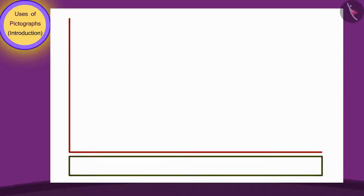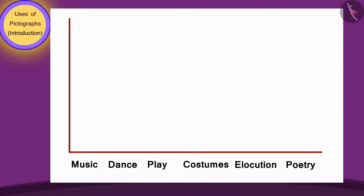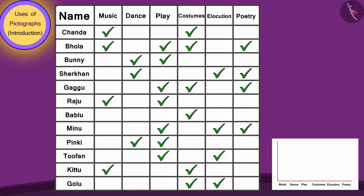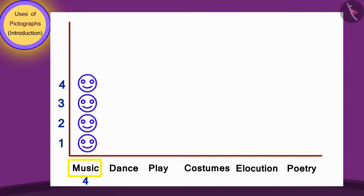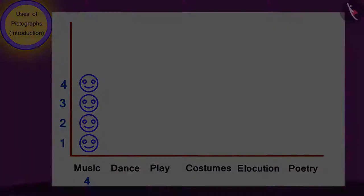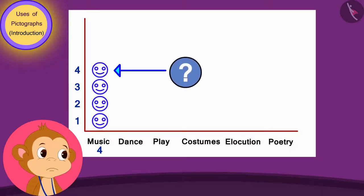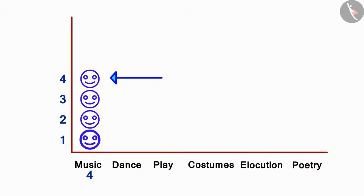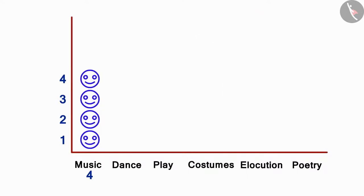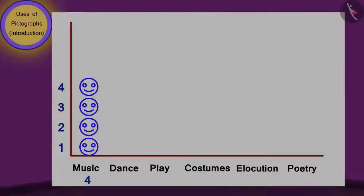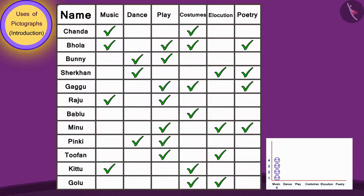Appu said, see, I have written the names of the programs on a horizontal line. Then I counted the symbols made under the singing program in your table and drew an equal number of faces on top of the singing program in my pictograph. I have used the symbol of a face here to show every child participating in the program — you can use any symbol. Now, see in your table and tell me how many faces should I make above the dance program?